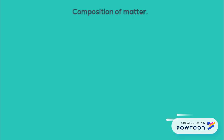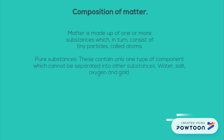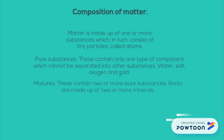Composition of matter. Matter is made up of one or more substances, which in turn consist of tiny particles called atoms. Pure substances contain only one type of component, which cannot be separated into other substances — for example, water or salt. Mixtures contain two or more pure substances; for example, rocks are made up of two or more minerals.